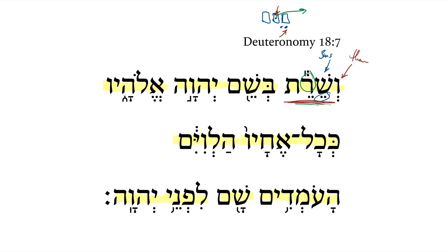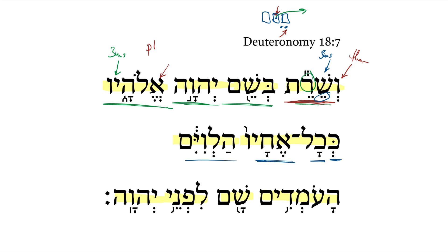Then he shall serve in the name of the Lord his God. Notice here we get the third masculine singular pronominal suffix — the plural version — not because he is serving the Lord his God in a plural sense, but because Elohim is plural by default. Next we get the comparative phrase: like all his brothers, the Levites. The Levites here is standing in apposition to 'his brothers.'